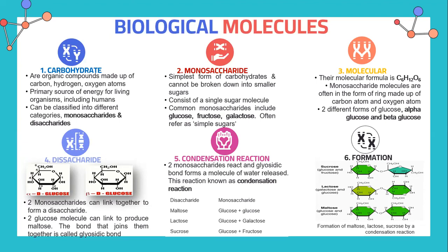Monosaccharides can link together to form a disaccharide. If you can see in this diagram, this is alpha glucose and this is beta glucose. The two glucose molecules can link together to produce maltose, and the bond that joins them together is called a glycosidic bond.